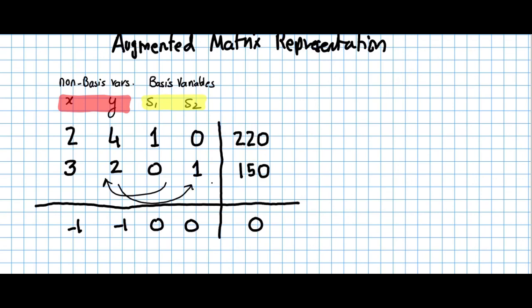The conventional approach to do this would be using Gauss-Jordan elimination. But we will be using a pivot point to ensure that the maximum value is selected. If we start with any arbitrary row, we will not be getting an optimum solution. So the point is that we need to carefully select a pivot point. The way this works is that first we are going to pick the smallest negative number from amongst the non-basis variables.